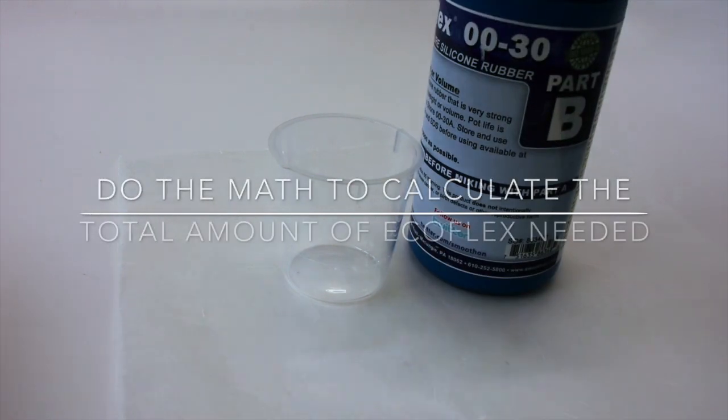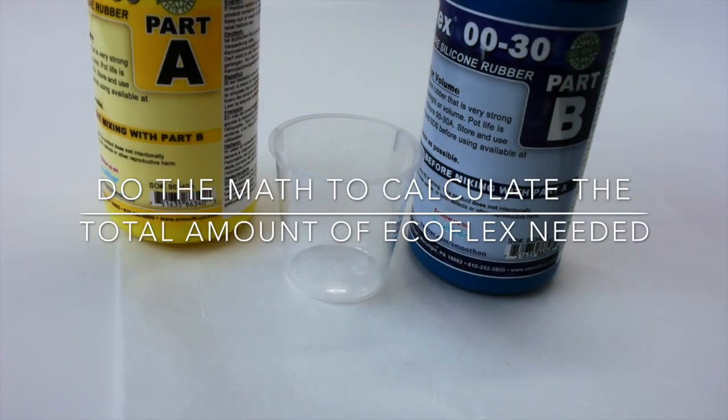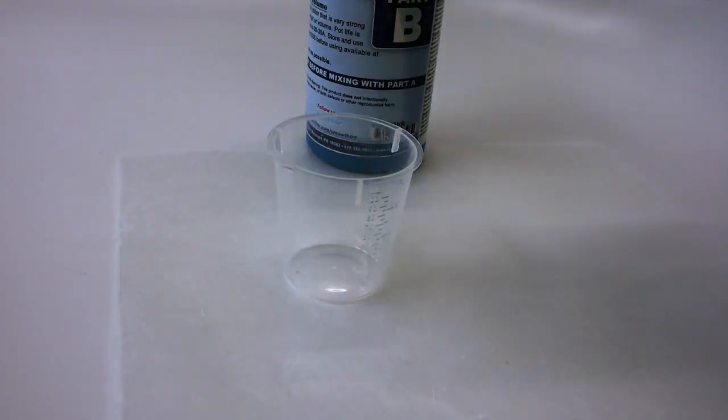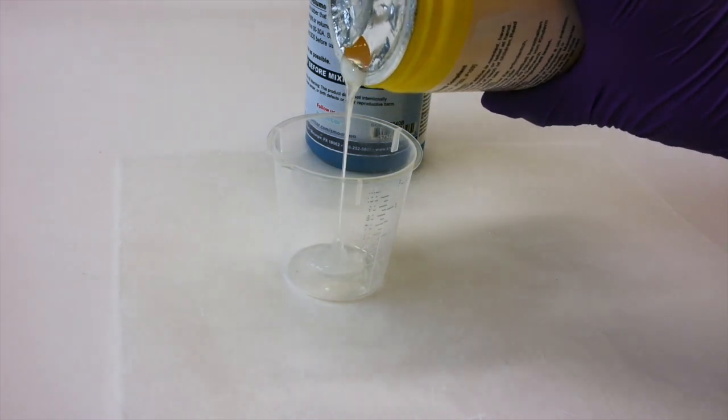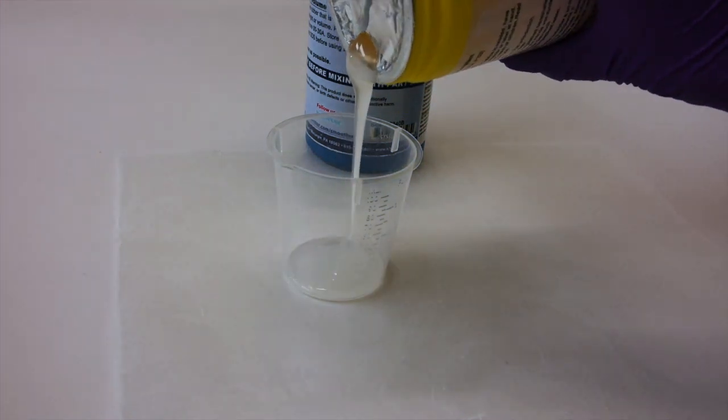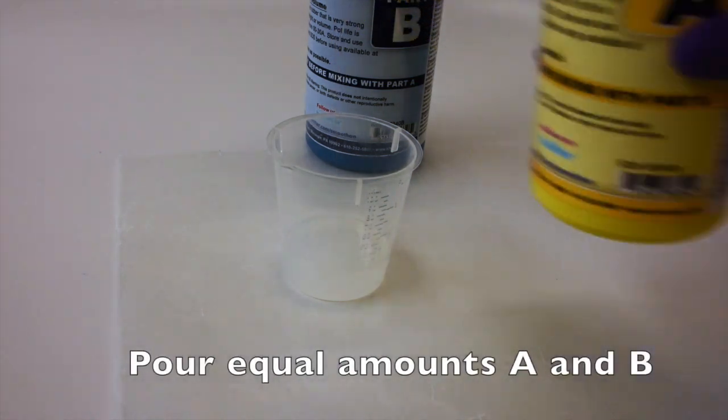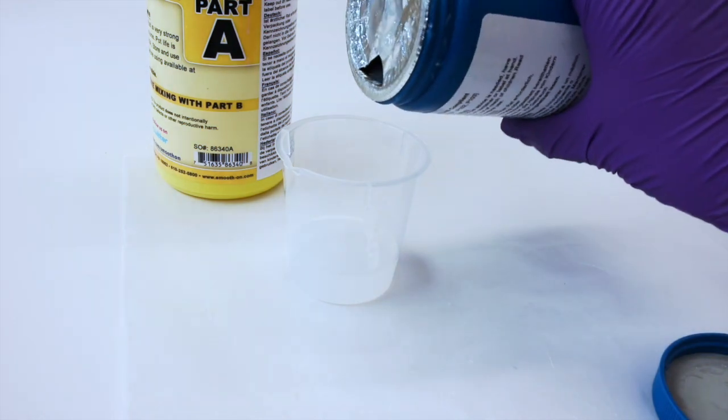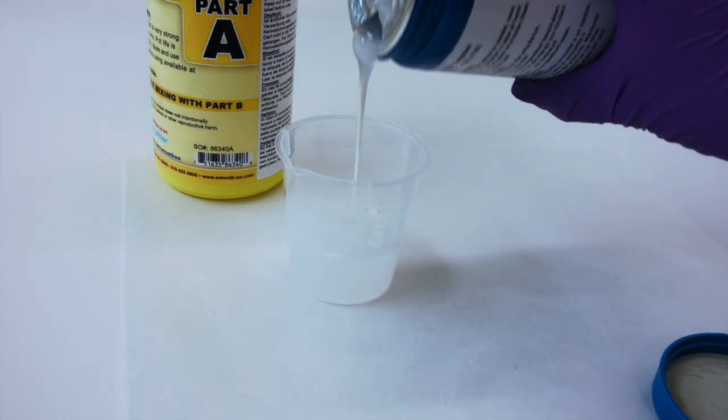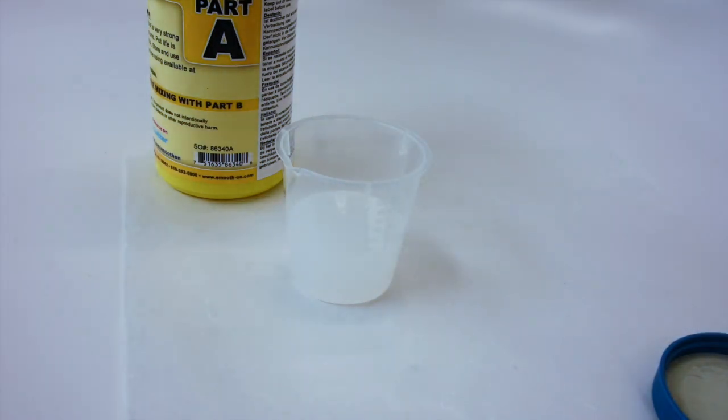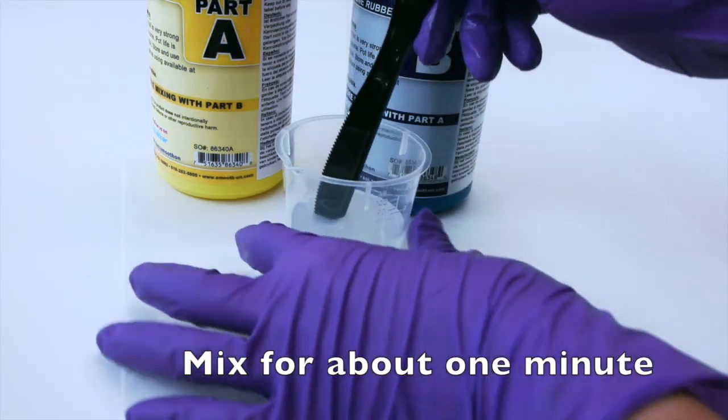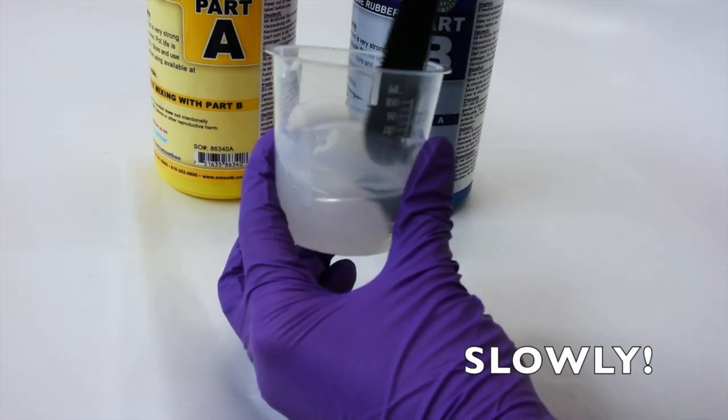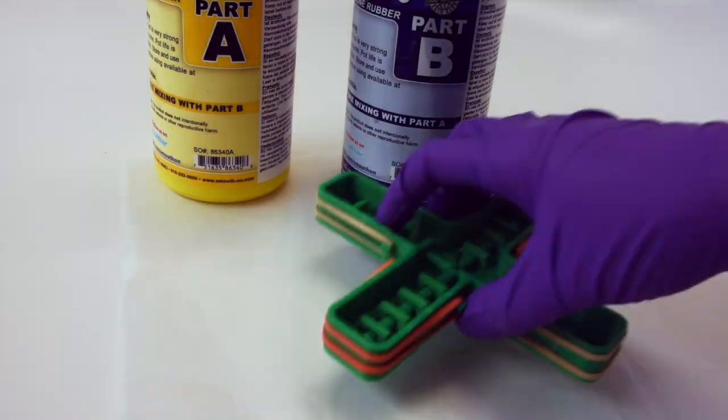Use the sheet with volume measurements for each part to calculate the total amount of EcoFlex that your design needs. Pour equal amounts of part A and part B. Mix for about one minute. Mixing slowly will reduce the amount of bubbles and your chances of the gripper popping.